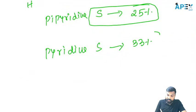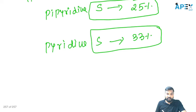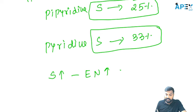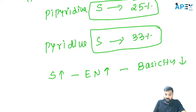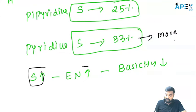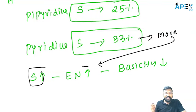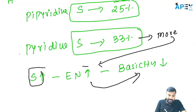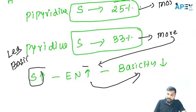Now apply the basic concept: s-character increases → electronegativity increases → basicity decreases. Out of pyridine and piperidine, pyridine has more s-character. So pyridine has more electronegativity, and therefore less basicity. Whereas piperidine has more basic nature.